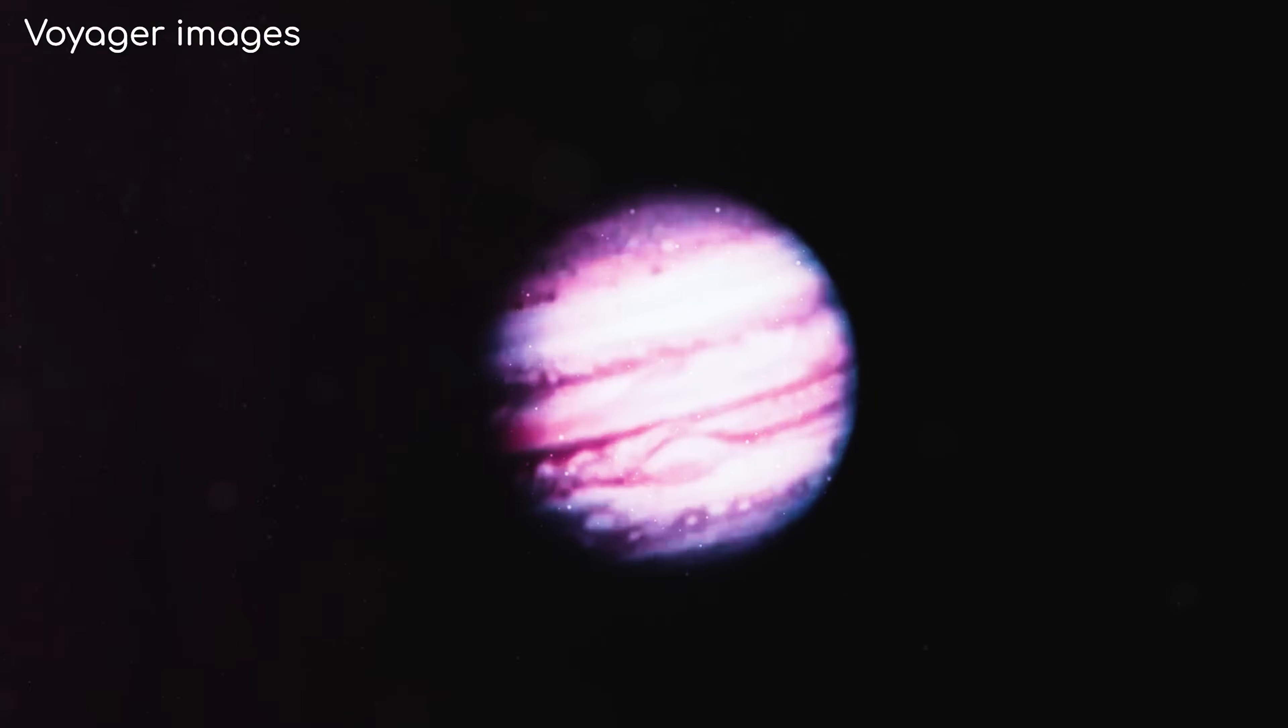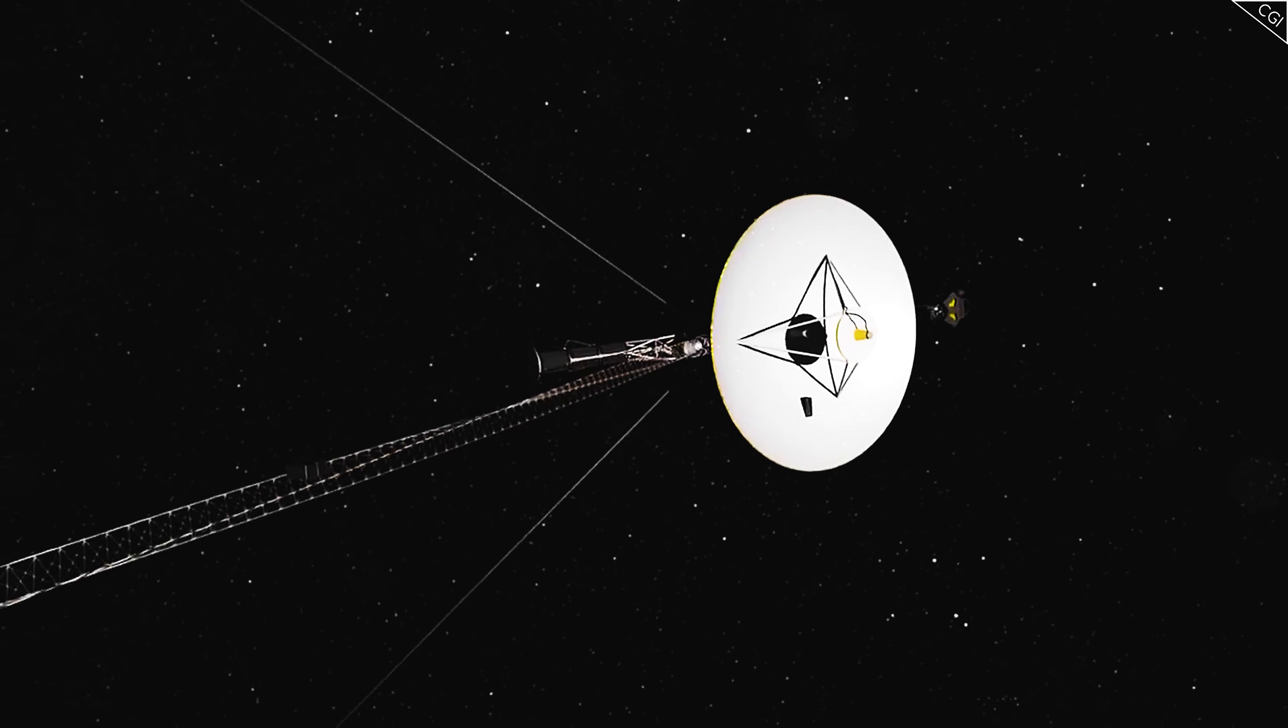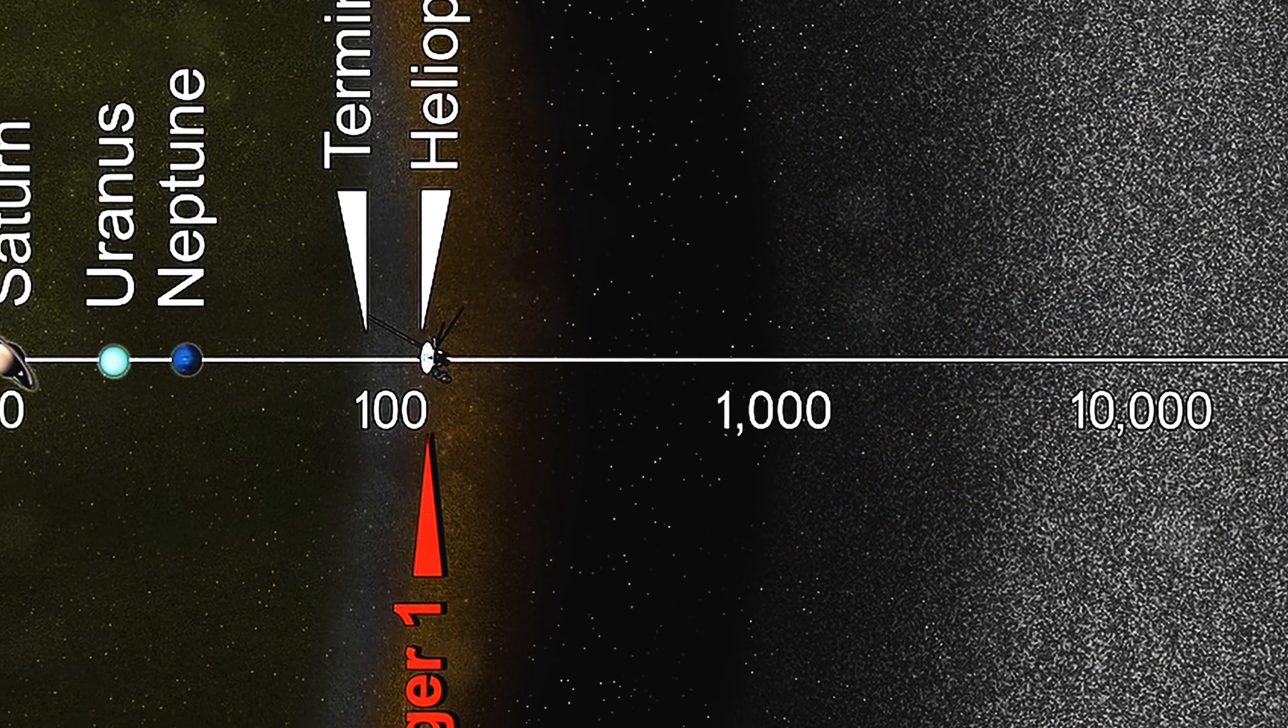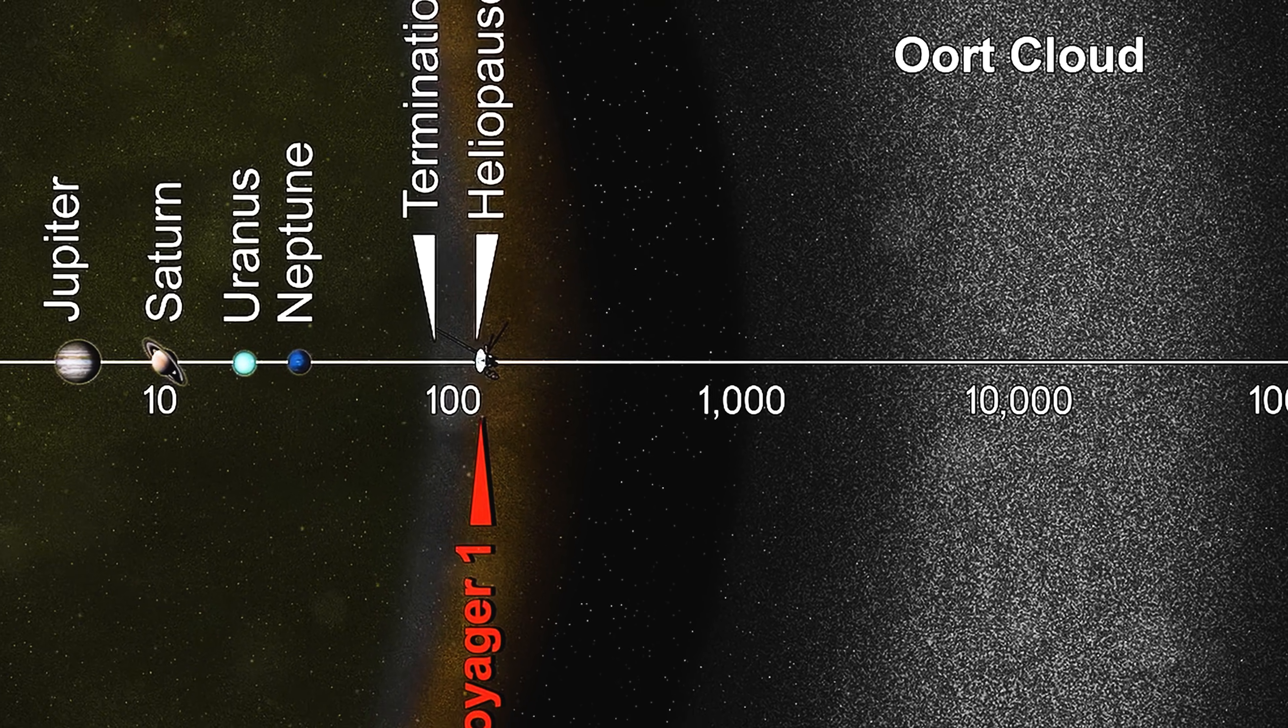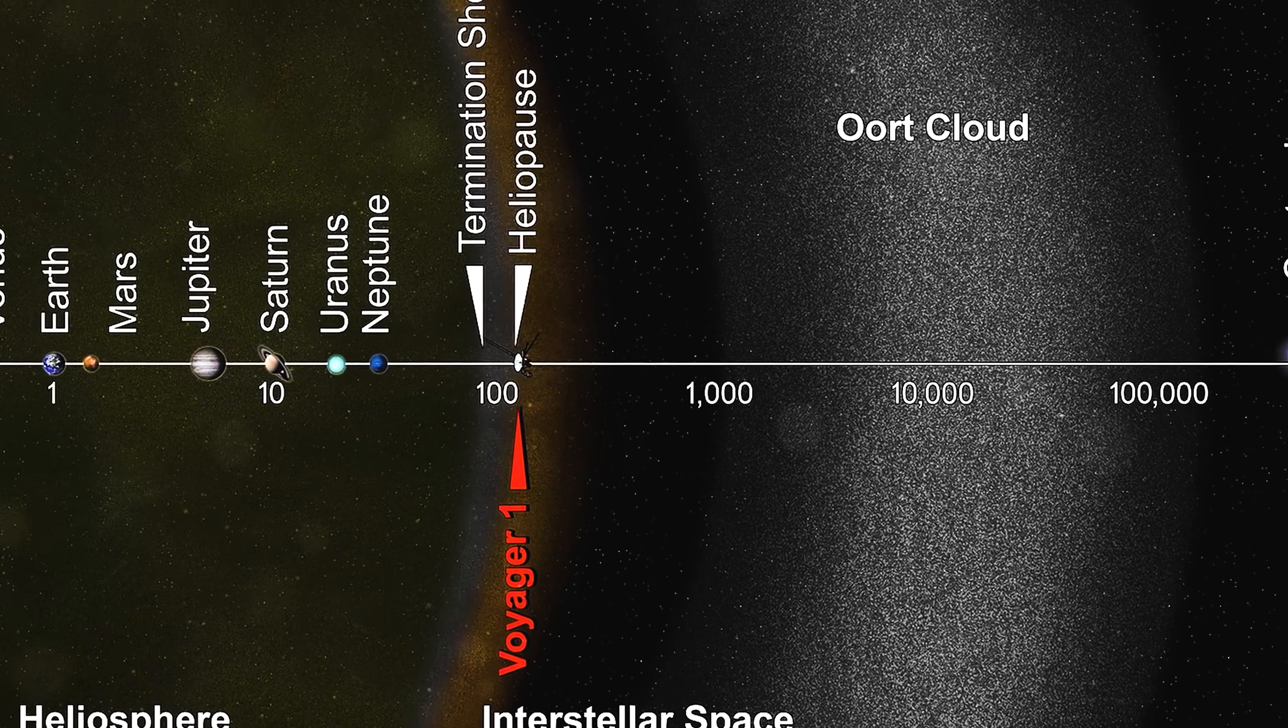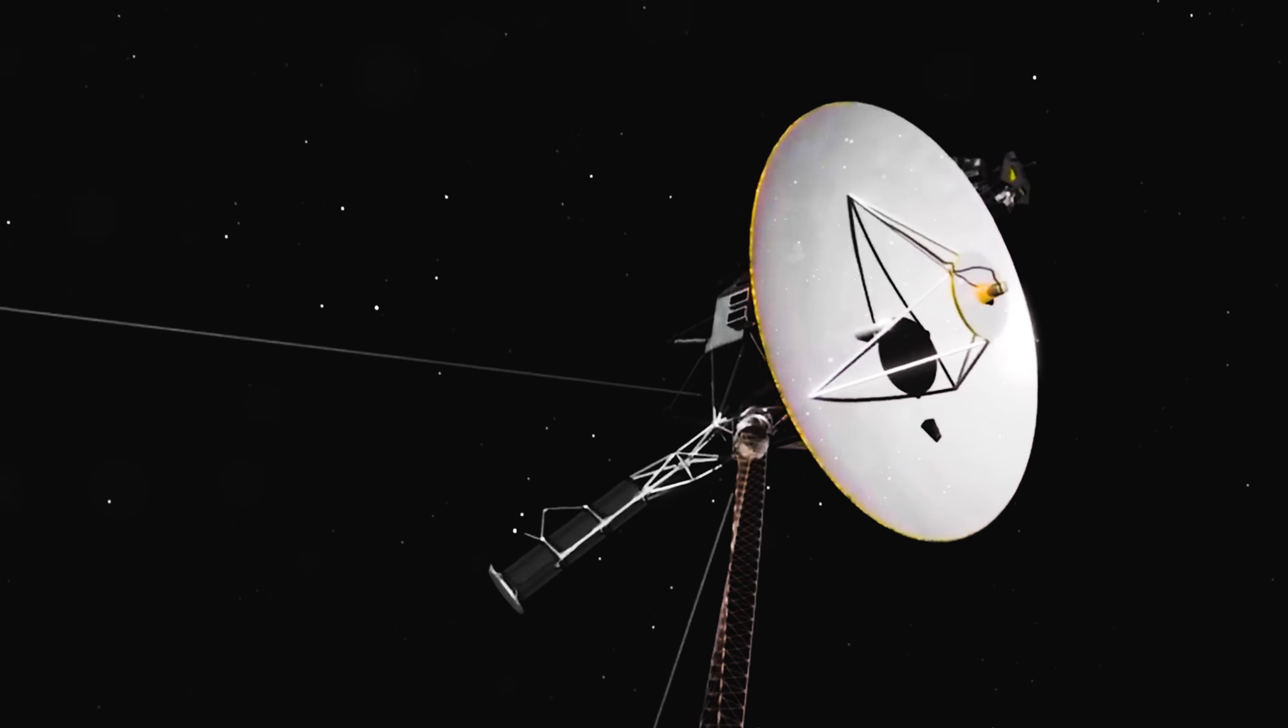Most diagrams show the edge of the solar system as a clean circle, the heliopause, the place where the solar wind stops and interstellar space begins. Reality is nothing like those diagrams. Voyager 1 reached the heliopause in 2012, and instead of a soft transition, it hit something like a cosmic wall. In a single moment, the flow of solar particles vanished. Galactic cosmic rays surged. The magnetic field abruptly twisted into a new orientation. It was like stepping out of one world and into another instantly.